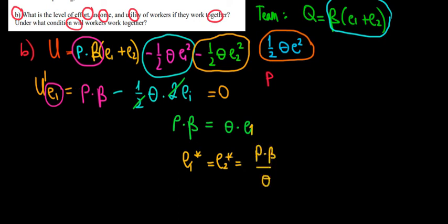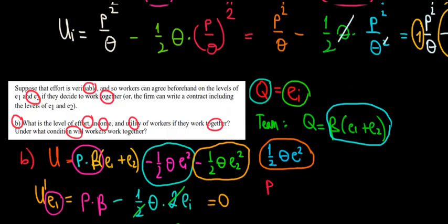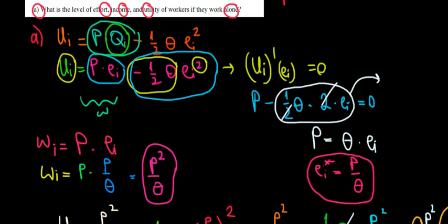Before going further, let's compare this with the previous case. This is the effort level now, whereas before when they were thinking only about their own utility without maximizing team production, the effort level was p over theta.